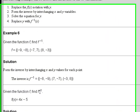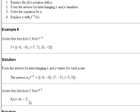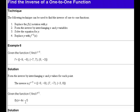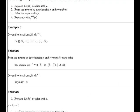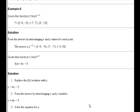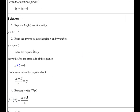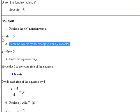Given the function f, find f inverse: f of x equals 4x minus 5. Start by replacing f of x with y, giving y equals 4x minus 5. Then form the inverse by interchanging the x and the y variables — y becomes x and x becomes y — giving x equals 4y minus 5.